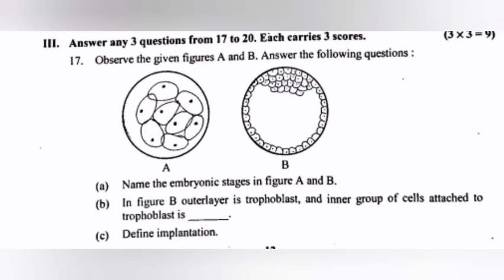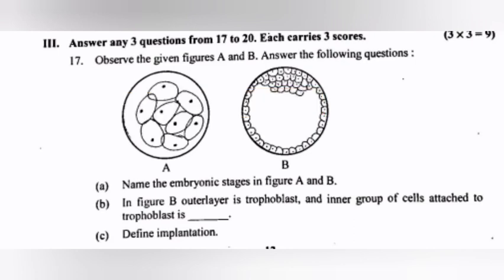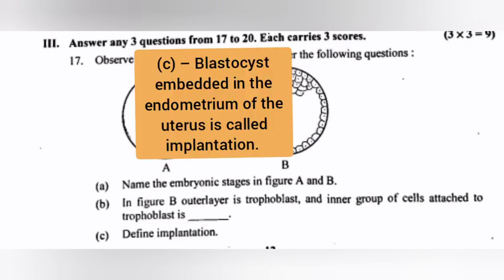Question 17: Observe the given figures A and B and answer the following questions. a) Name the embryonic stages in figure A and B. Answer: a) morula; b) blastocyte. b) In figure B, the outer layer is trophoblast and the inner group of cells attached to trophoblast is the inner cell mass. c) Define implantation: blastocyte embedded in the endometrium of the uterus is called implantation.